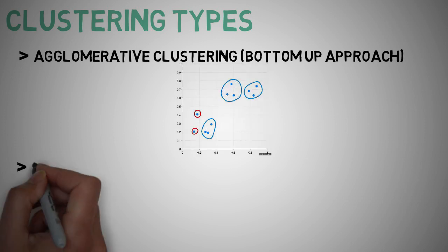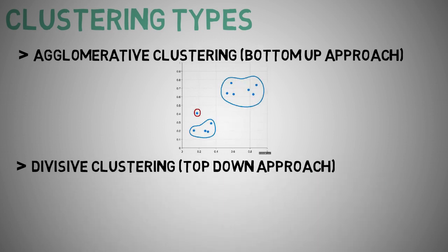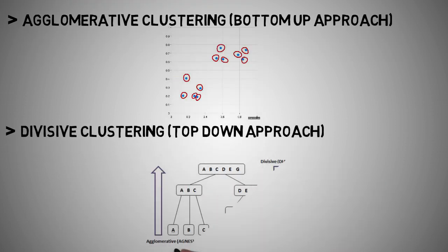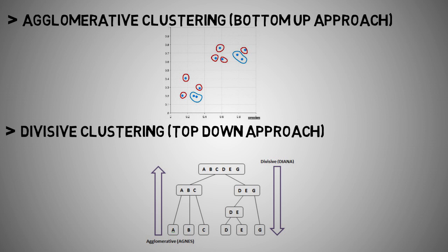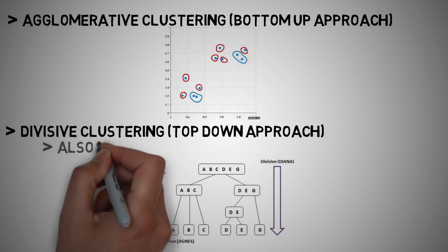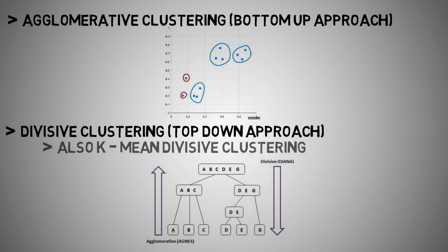And then there is the divisive clustering which is a top down approach. It is less popular than the agglomerative method. But with divisive, all observations start with one cluster and splits are performed recursively as one moves down the hierarchy. Now you get many variations of these approaches. You even get K means divisive clustering. But we won't go too deep into that yet.